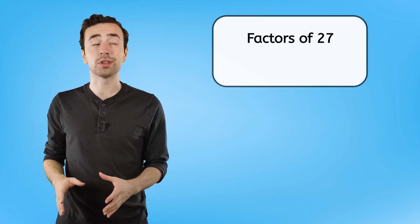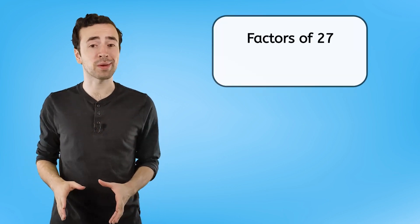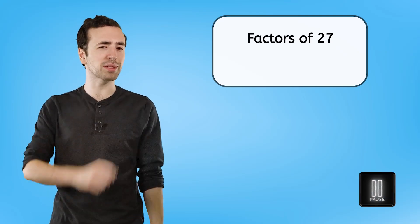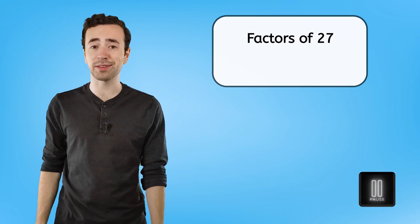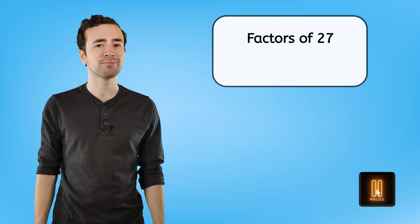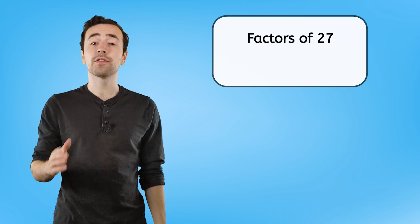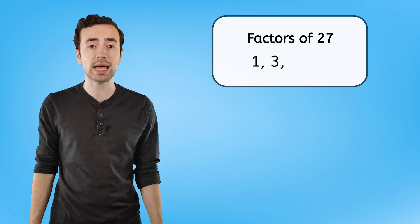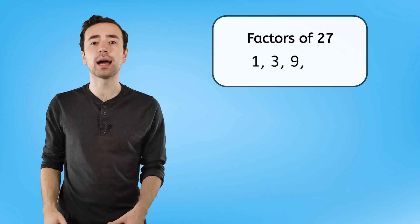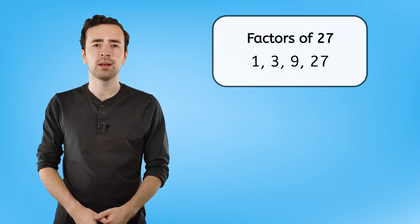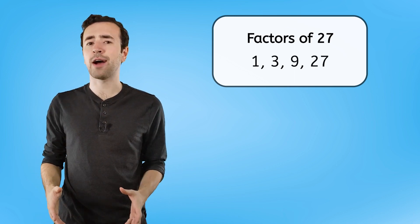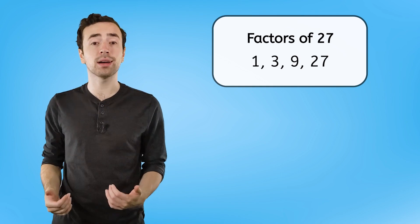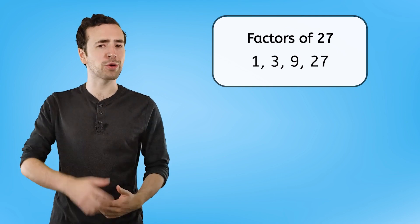Now it's your turn. Can you find all the factors of 27? Pause the video here while you list them in your guided notes. The factors of 27 are 1, 3, 9, and 27. Let's investigate how this information can help us corral those critters.